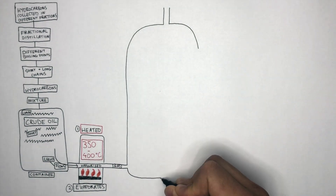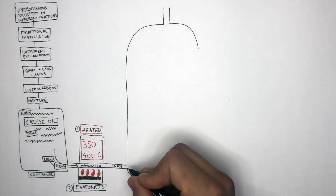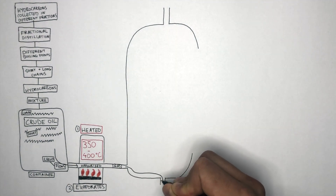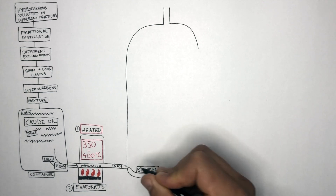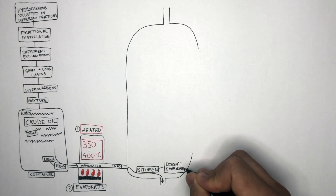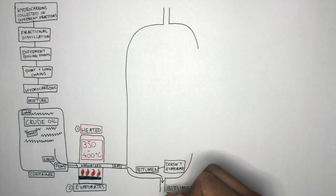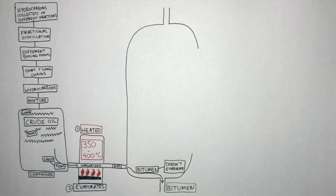The fractionating column is heated to very high temperatures of 350 to 400 degrees Celsius, but not all of the crude oil evaporates into a gas. There is a fraction called bitumen which flows to the bottom of the fractionating column. Bitumen remains as a liquid and does not evaporate, because its boiling point is above 400 degrees Celsius. Bitumen is the fraction with the highest boiling point and is collected as a liquid at the bottom of the fractionating column.